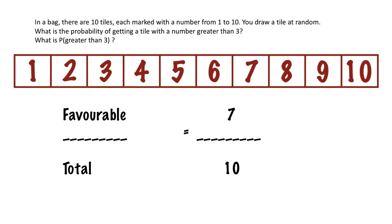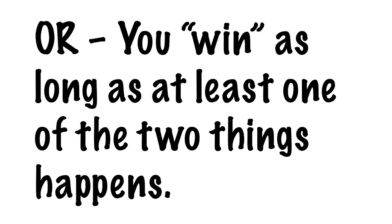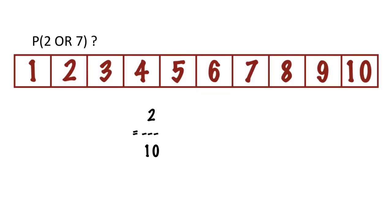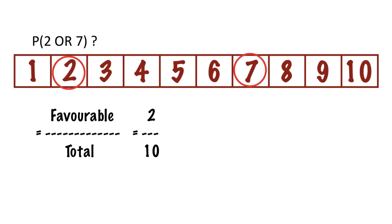That's a little more complicated, but it still hasn't dealt with the word OR. Whenever you see OR in probability, you have a favorable outcome as long as at least one of the things happens. So let's say I'm calculating the probability of getting a two or a seven when I draw a tile. I'll have a favorable outcome as long as I get either a two or a seven. That's two favorable outcomes out of ten possible outcomes — two out of ten.